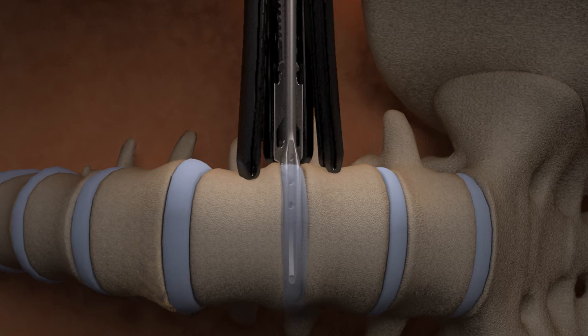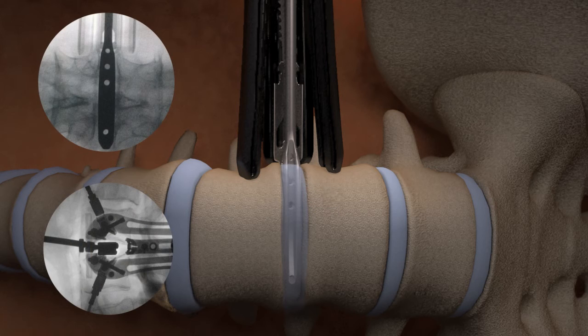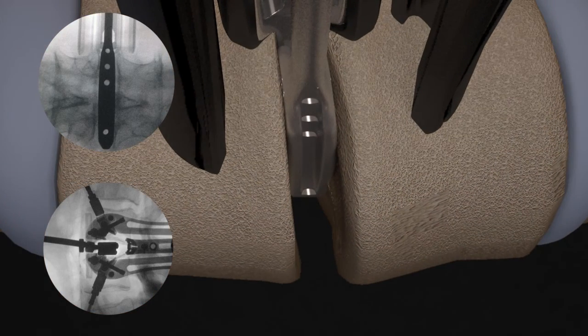The three sizing windows closest to the instrument shaft correspond to lengths of 40, 50, and 60 millimeters. Confirm the trial is in a good AP position using lateral fluoroscopy. The target implant position is centered between the middle and anterior third of the disc space.